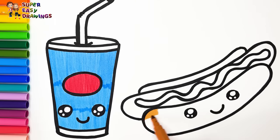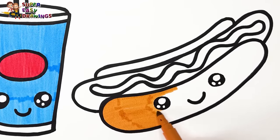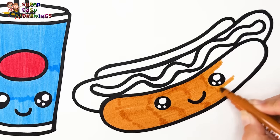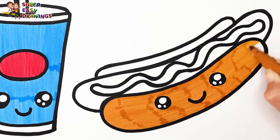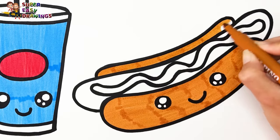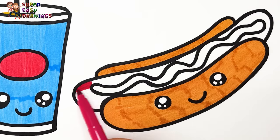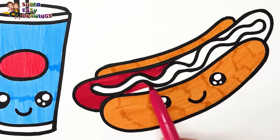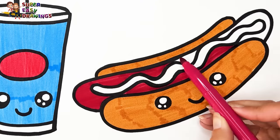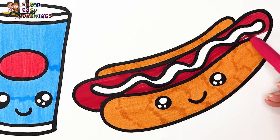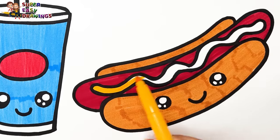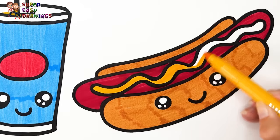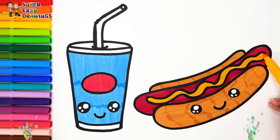I used light brown for the bun of this hot dog. And here. Then I colored the sausage red. For the mustard, I used this yellow tone. Excellent!